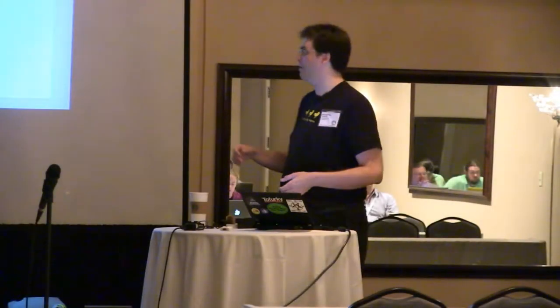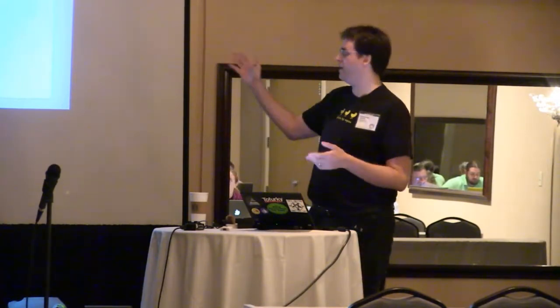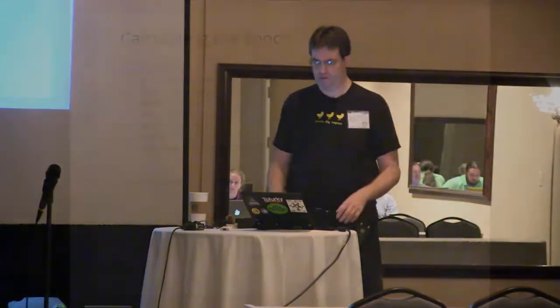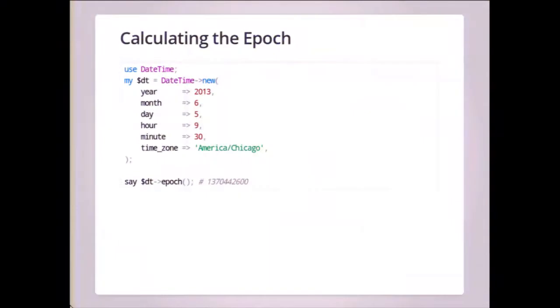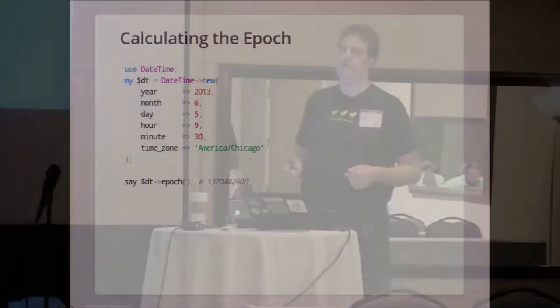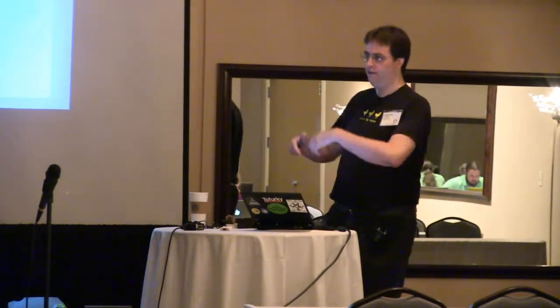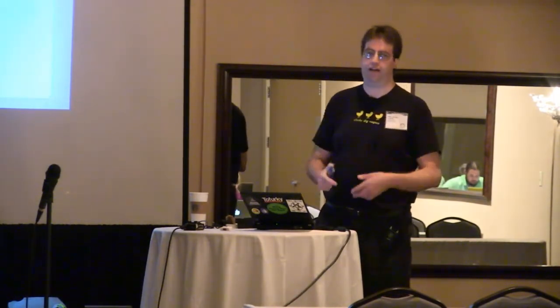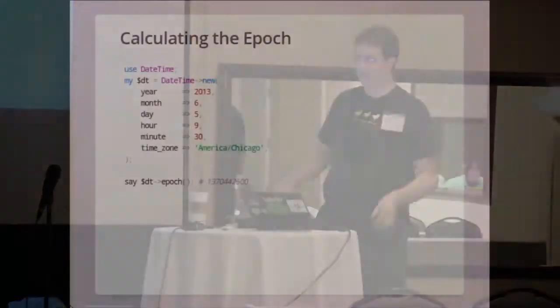You can calculate the Epoch from a DateTime object: make an arbitrary DateTime object, ask for the Epoch, and it prints it out. You can also construct a DateTime object from an Epoch — there's a method called new_from_epoch. You pass in the Epoch and get a DateTime object back.